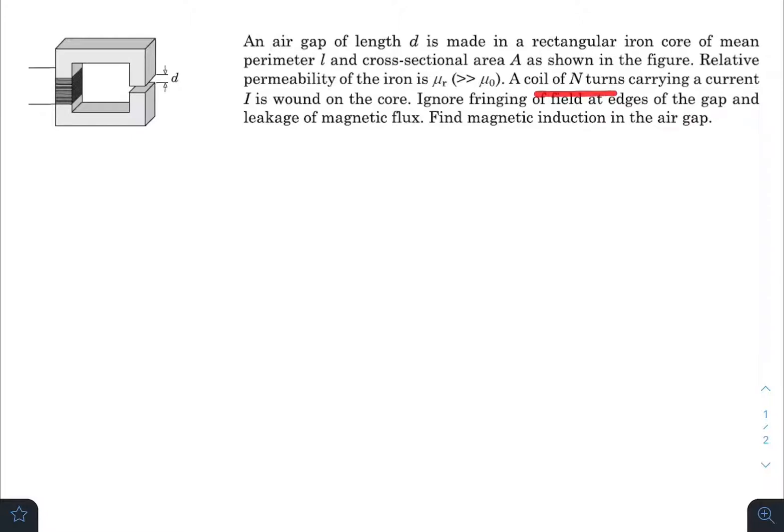A coil of N turns carrying a current I is wound on the core. Ignoring the fringing of field at edges of the gap and leakage of magnetic flux, we need to find out the magnetic induction in the air gap.